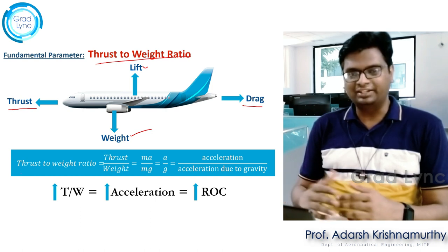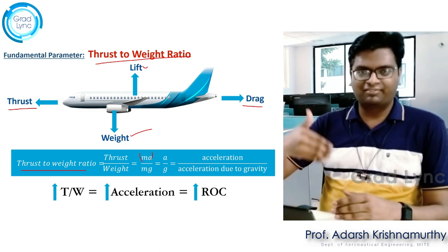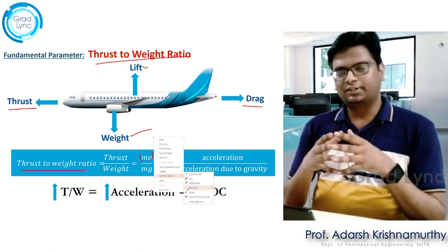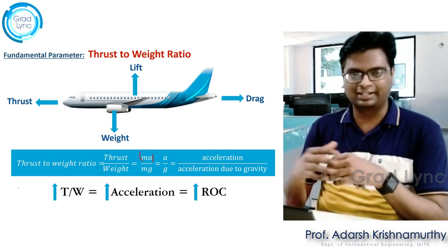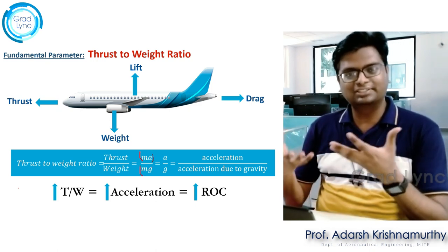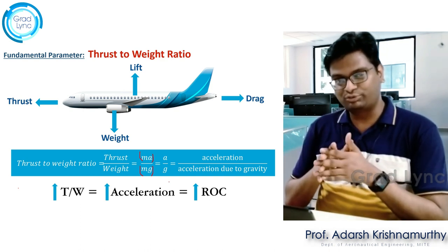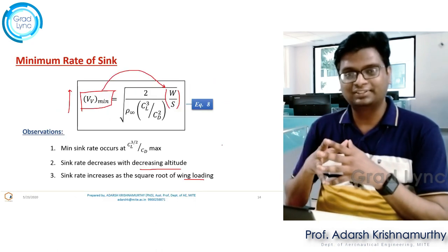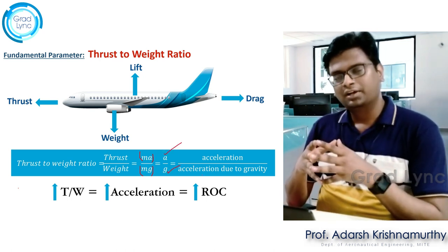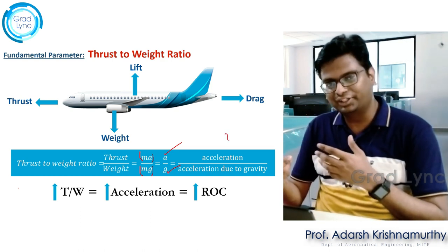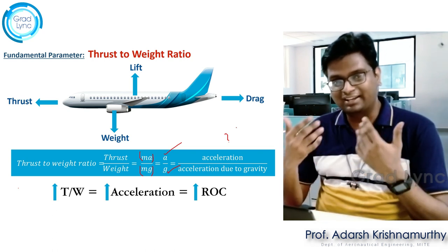If I take the ratio of thrust to weight — using Newton's second law, thrust can be written as mass of the aircraft into its acceleration, whereas weight is the mass of the aircraft multiplied by the acceleration due to gravity. So another way of looking at it: the thrust-to-weight ratio is also the ratio of the aircraft's acceleration to the acceleration due to gravity. The question is whether the aircraft's acceleration is more or less than g, or whether the thrust-to-weight ratio is greater than or less than 1.